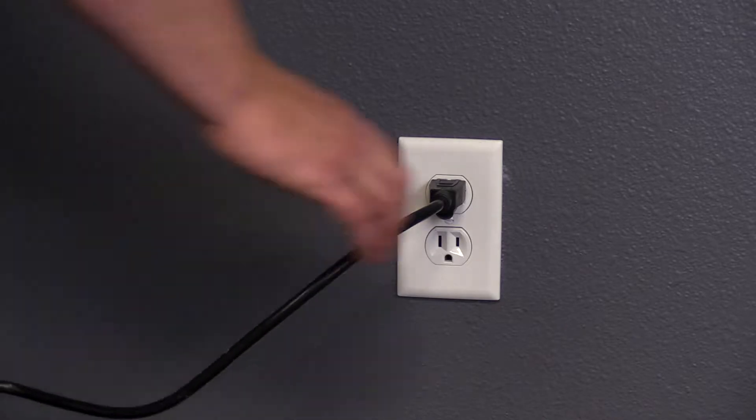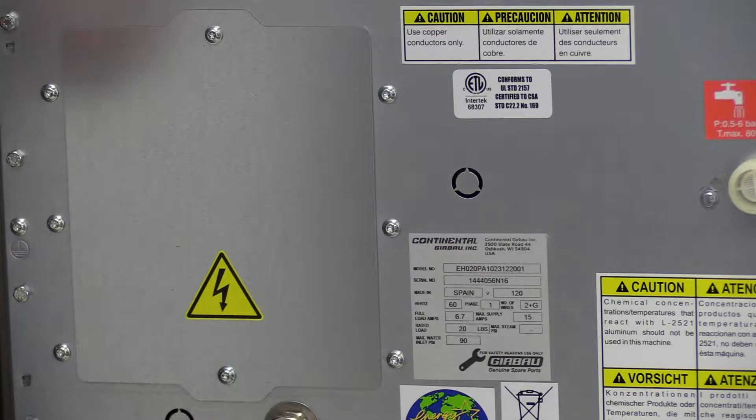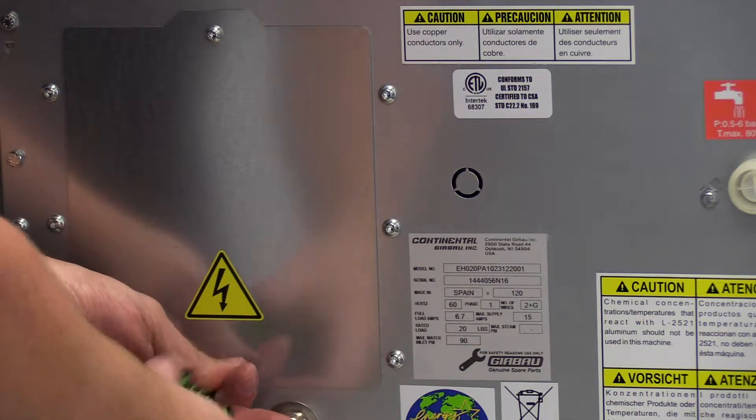First, disconnect power to the washer. You might want to wait three to five minutes for power to dissipate. Locate the terminal connection on the back of the washer.